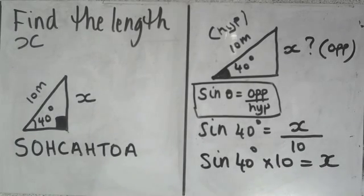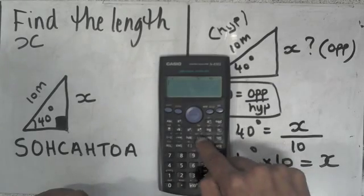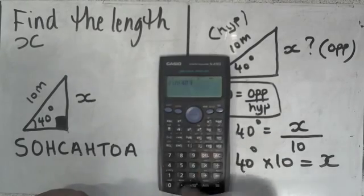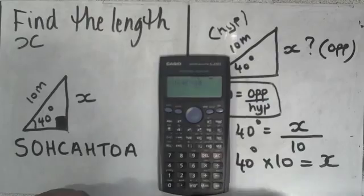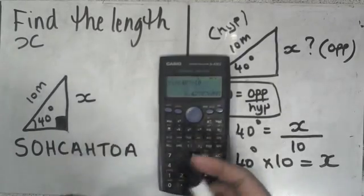Now you need to take your scientific calculator and type in the numbers that you have here and work out your answer. So let's do this. Type sine 40 times 10, enter, and it gives you 6.427.